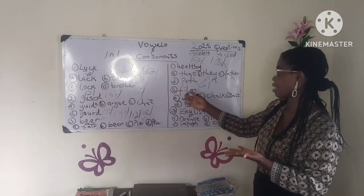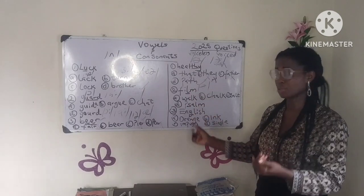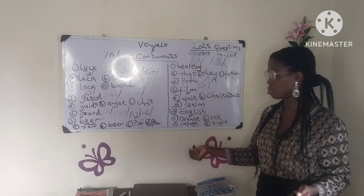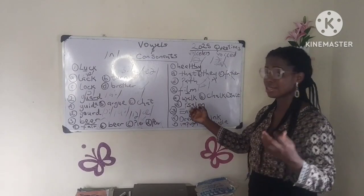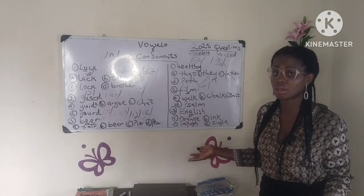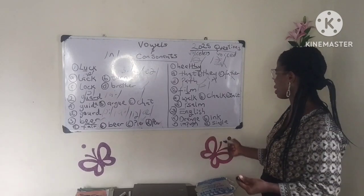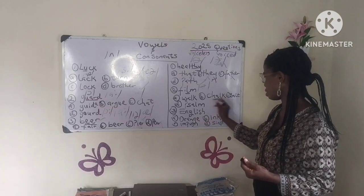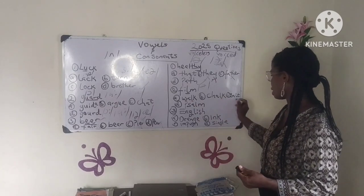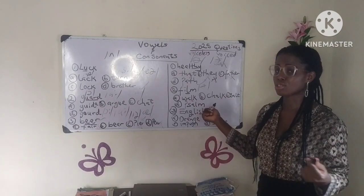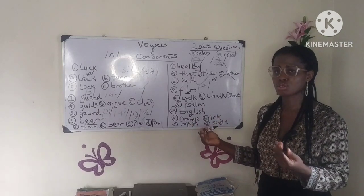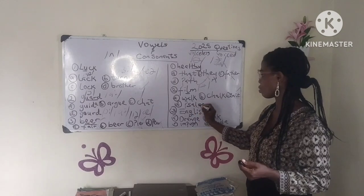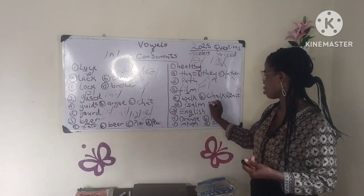Now let's see the next one. We have FILM, and we have to identify the option that has the same consonant sound. WALK — it has no L sound; it's WALK, not 'walk'. CHALK — it's CHALK, not 'chalk' — the L is silent. SALT — it's not 'solt', it's SALT; the L in SALT is pronounced. So SALT is the correct answer. SAM — it's not 'some', it's SAM — that's wrong.